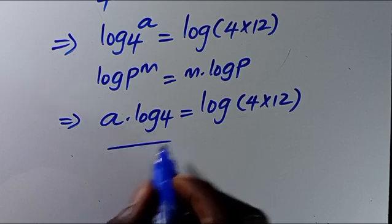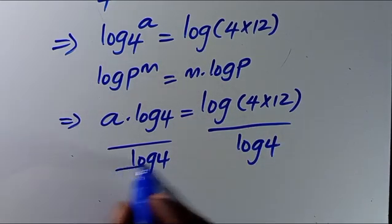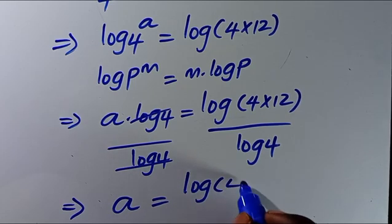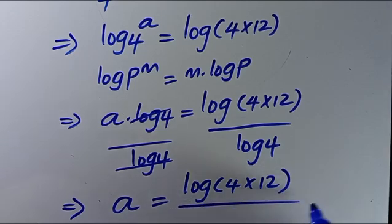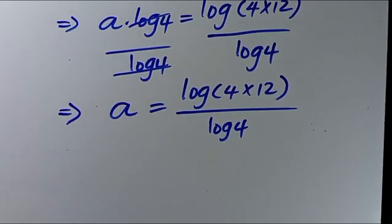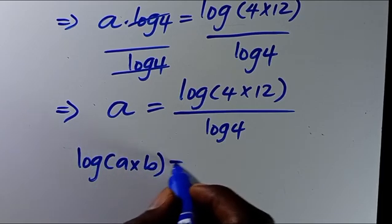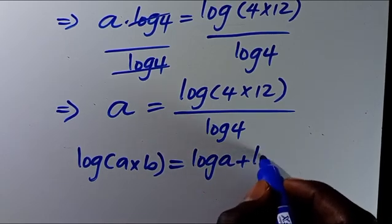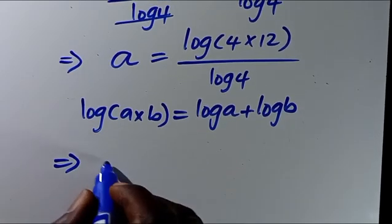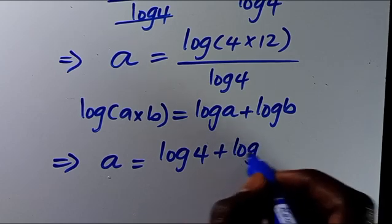Dividing through by log 4, we cancel out log 4, and we are going to have a equals log of 4 times 12 over log 4. This gives us a equals log 4 plus log 12.